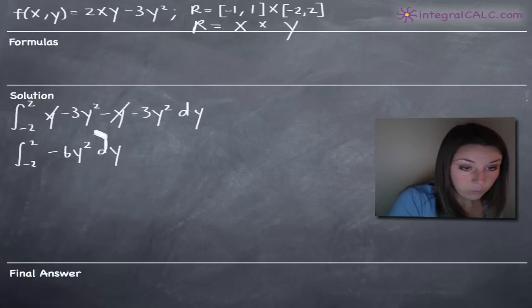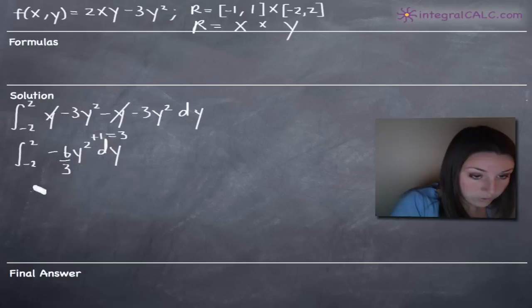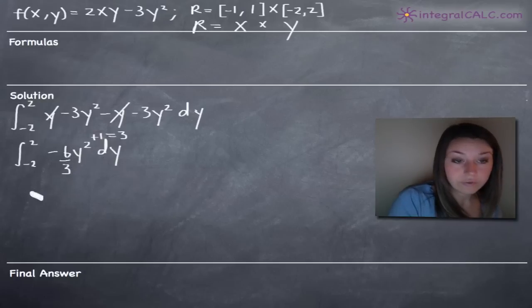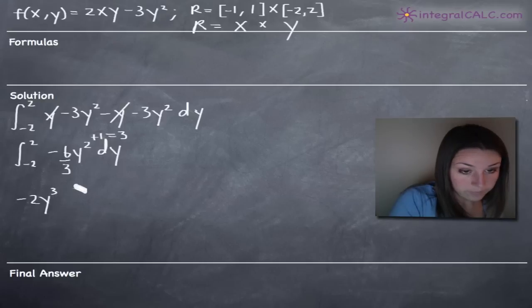We'll add 1 to the exponent to get 3. 2 plus 1 equals 3, which means we're dividing negative 6 by 3. This is going to end up being negative 6 over 3, which is negative 2y cubed, and we'll be evaluating that on the range negative 2 to positive 2.